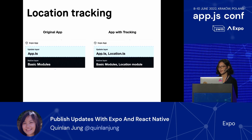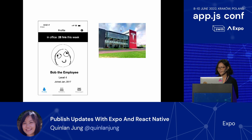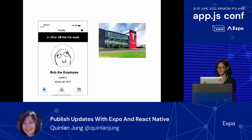To recap, now that we've made location tracking, we've got two versions of our app: the original version with basic application logic and basic native modules, and the second version with location tracking — the main difference being a native location module in the native layer. From the end user's perspective, whenever they go into the office, we track their current location and show Bob the employee his progress. In this example, Bob has been in office 28 hours this week, and that's not bad at all.